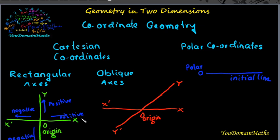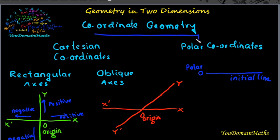We will discuss coordinate geometry. Coordinate geometry basically discusses Cartesian and polar coordinates, meaning two types of coordinate systems will be discussed in this video.